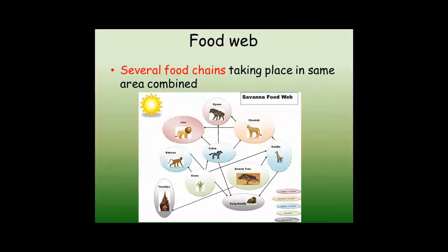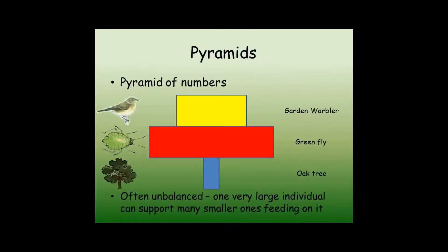If we combine all of the different food chains that show feeding relationships within an area, we can put together a food web. If we count up the number of individuals for each species in a food chain, we can create a pyramid of numbers. This can be very unbalanced, as some species are so much larger than others.